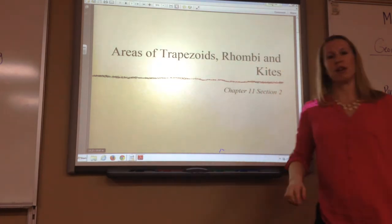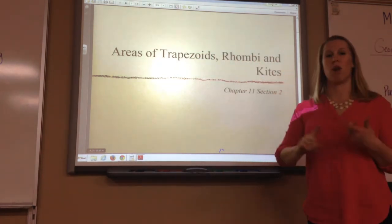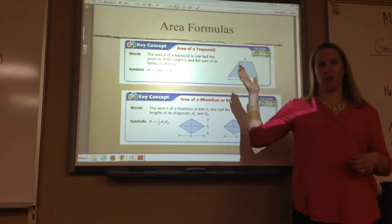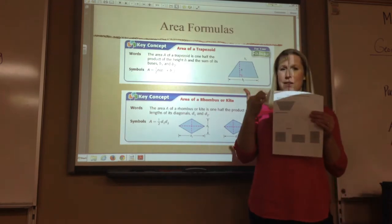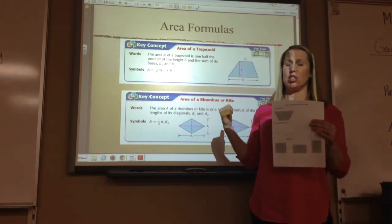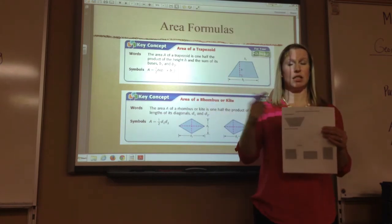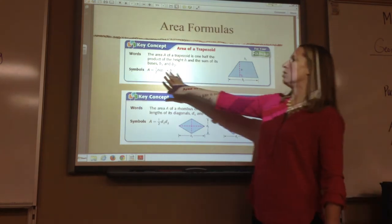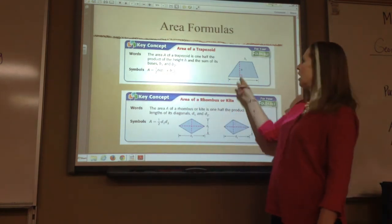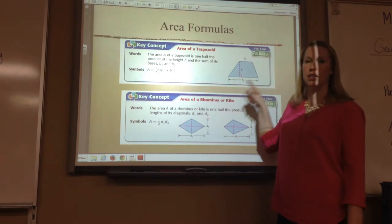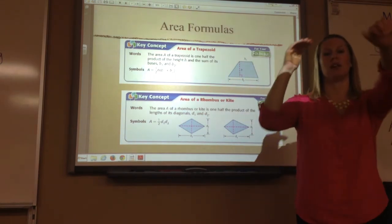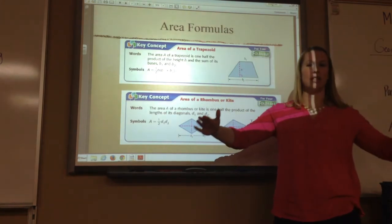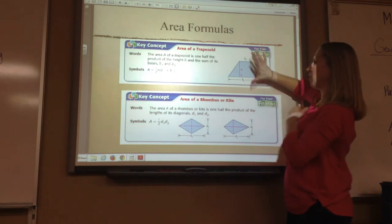Alright, to the lesson. So today we're going to talk about area of trapezoids, rhombuses, and kites. First we have a trapezoid. I know on your notes page your trapezoid is upside down, so just wait a minute — I have a better picture of the area formula in just a minute. The area of a trapezoid is one-half the height times base 1 plus base 2. The bases are the two sides that are parallel to each other; the other two sides on a trapezoid are never parallel.